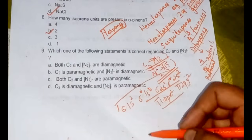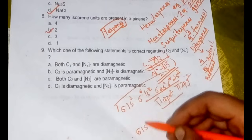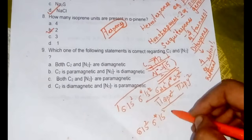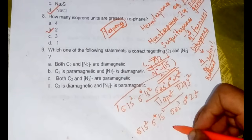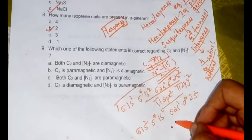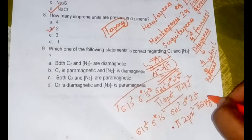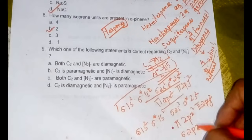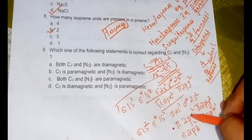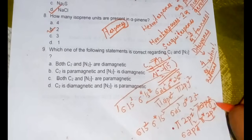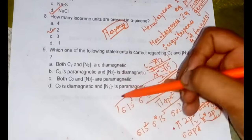I have already taken the filling of the orbitals according to molecular orbital theory, please watch that. Now in case of N2-: sigma 1s2, sigma star 1s2, sigma 2s2, sigma star 2s2, pi 2px2, pi 2py2, then sigma 2pz2 and we have pi star 2px1. Let's count it: 2, 4, 6, 8, 10, 12, 14, and 15. So we can see one electron is unpaired here so it will be paramagnetic. So C2 is diamagnetic and N2- is paramagnetic. Option D will be the right answer.